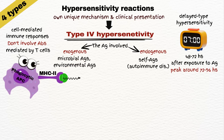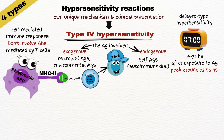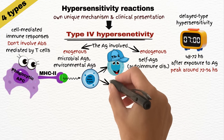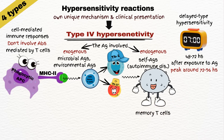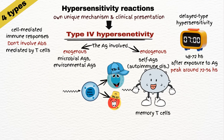During first exposure to the antigen, naive T-cells recognize the antigen-MHC complex on antigen-presenting cells. These naive T-cells differentiate into specific subtypes, mainly T-helper 1 cells and, to a lesser extent, T-helper 17 cells, depending on the cytokine environment. Some of these activated T-cells become memory T-cells, which remain in the body and can respond more rapidly upon subsequent exposures.